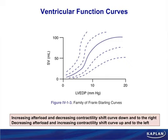Treat the solid purple line as the norm. Notice the axes: left ventricular end diastolic pressure. We could put something else on that axis — right atrial pressure, CVP, pulmonary wedge pressure, left ventricular end diastolic volume, left atrial pressure. All of these are indices of preload. On the y-axis, we have stroke volume, our index of performance — but we could put cardiac output, peak systolic pressure, or systolic performance. All of these are applicable.